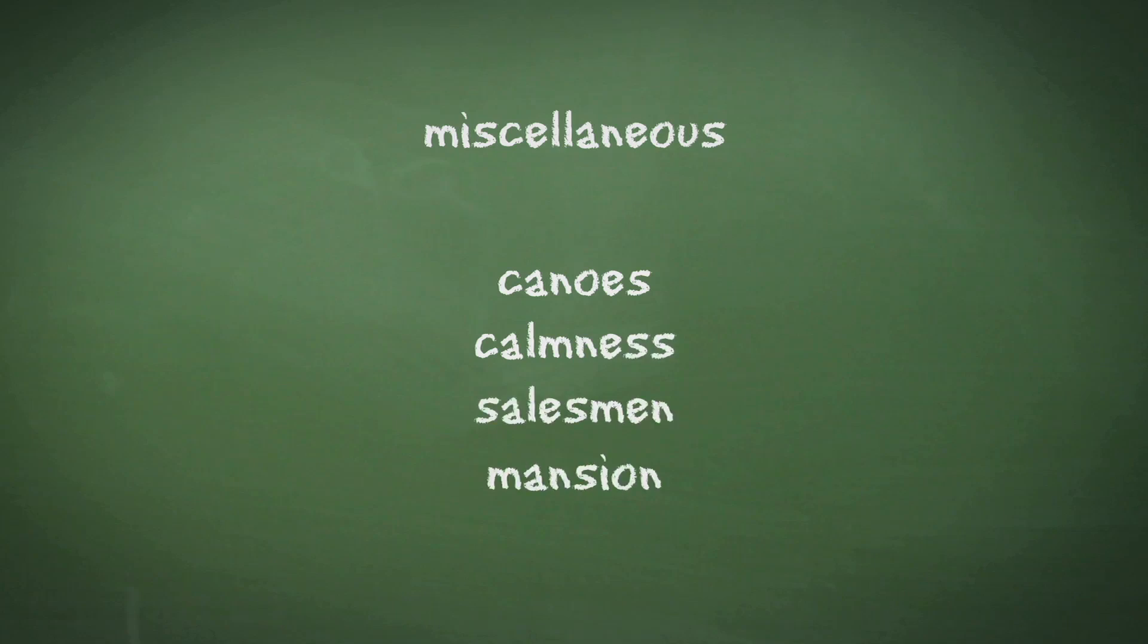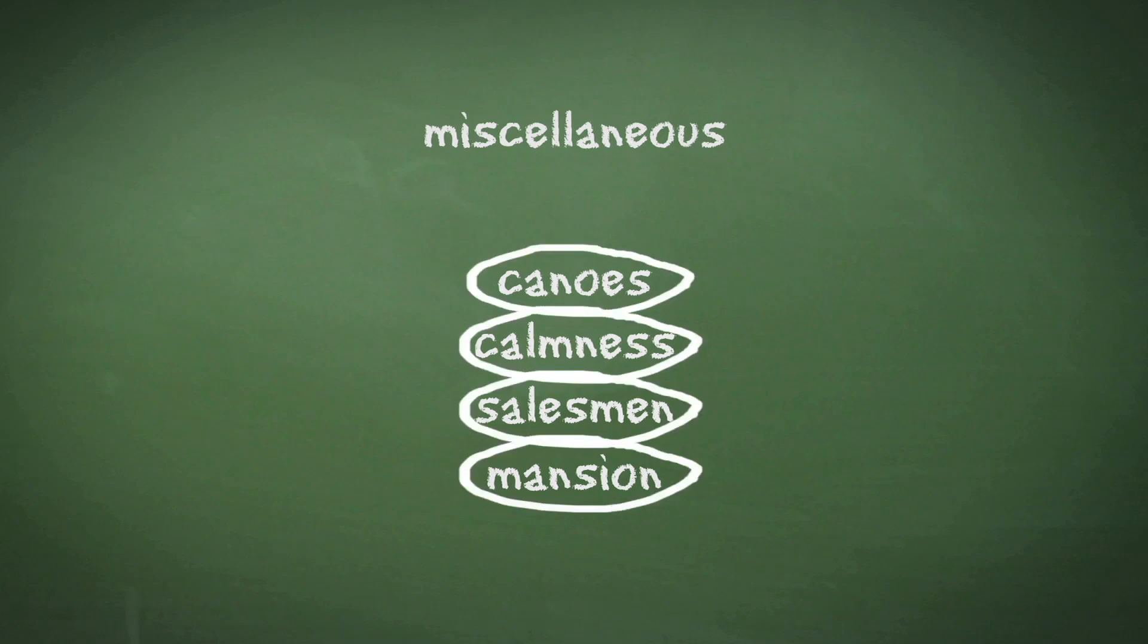These questions ask us to pick one word from a list that cannot be made solely from the letters of another word. With questions like these, start by looking at the answer options and work through them one at a time, eliminating any wrong answers.